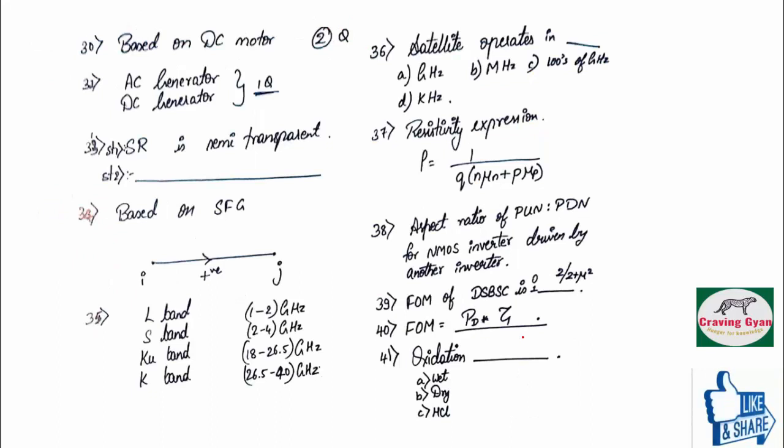Thirtieth question was based on DC motors. And thirty-first question was also based on DC motors. And thirty-second question, they have given the question based on AC generator and DC generator.